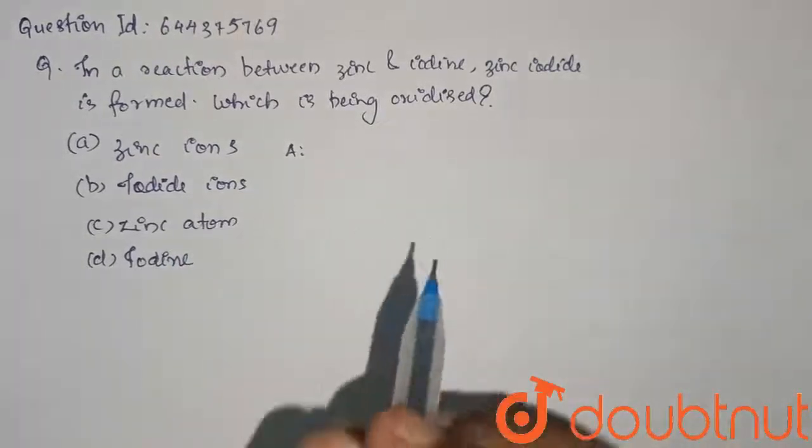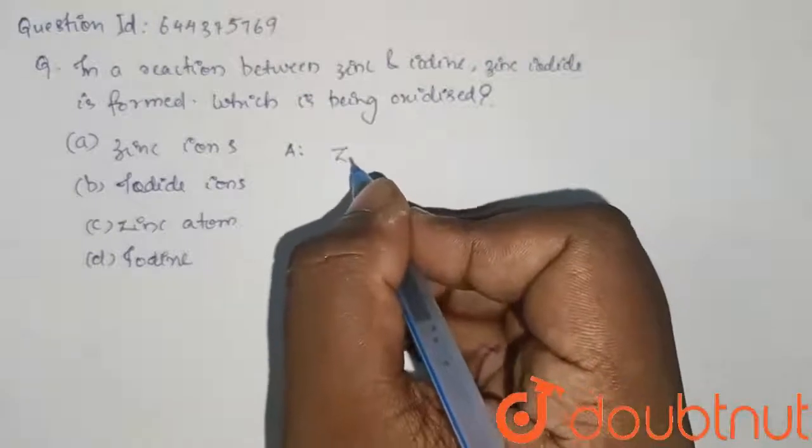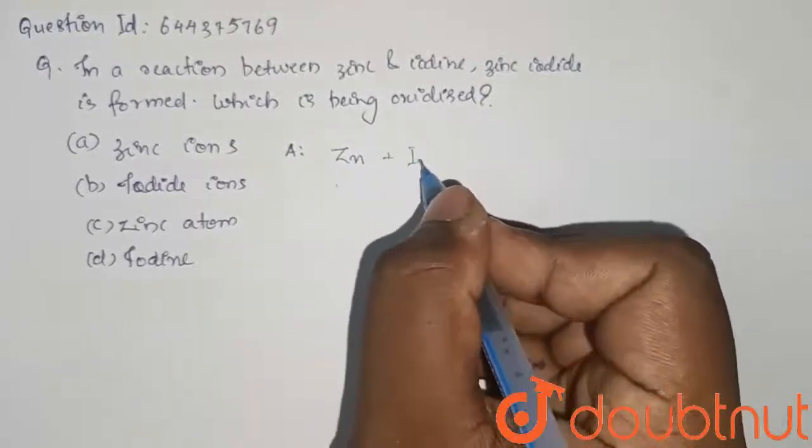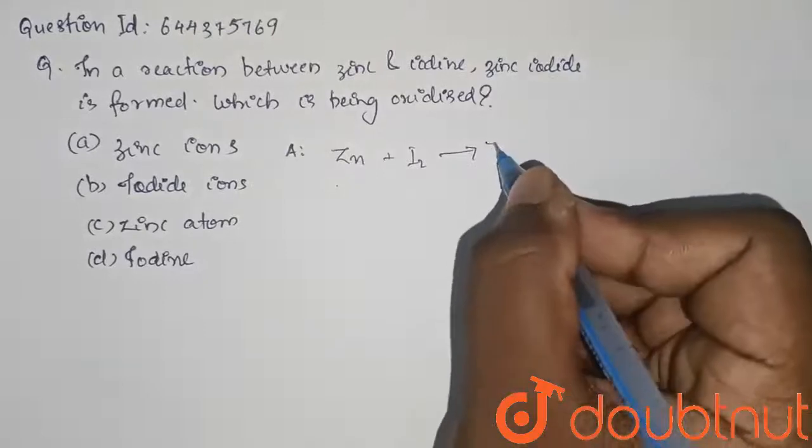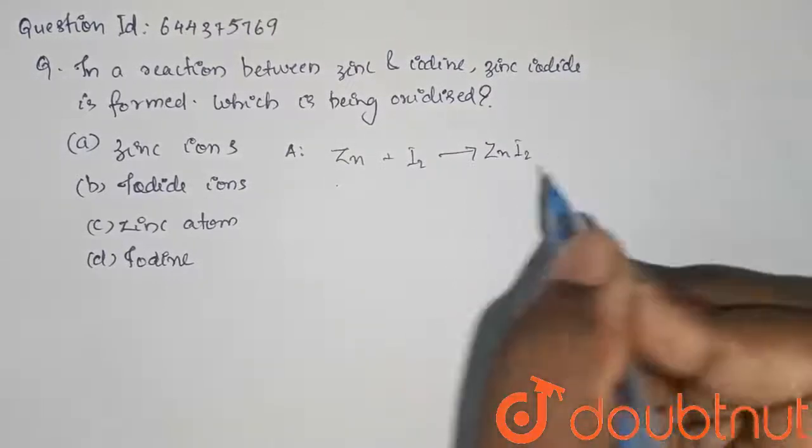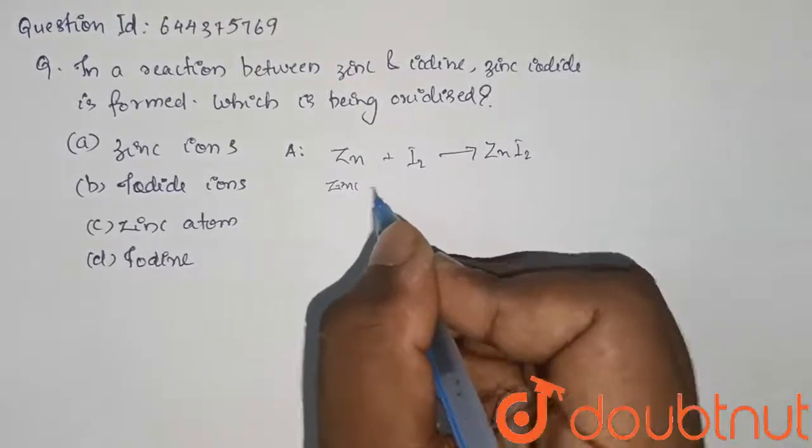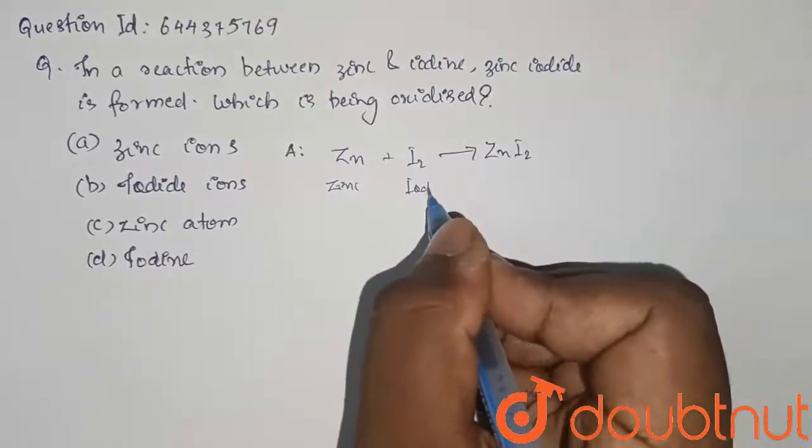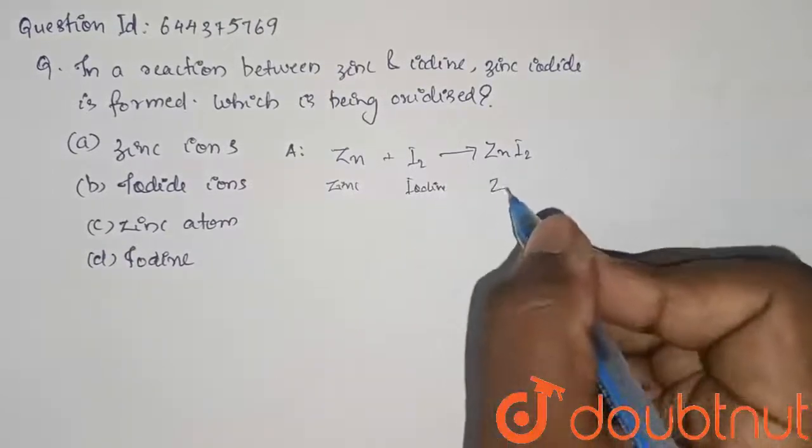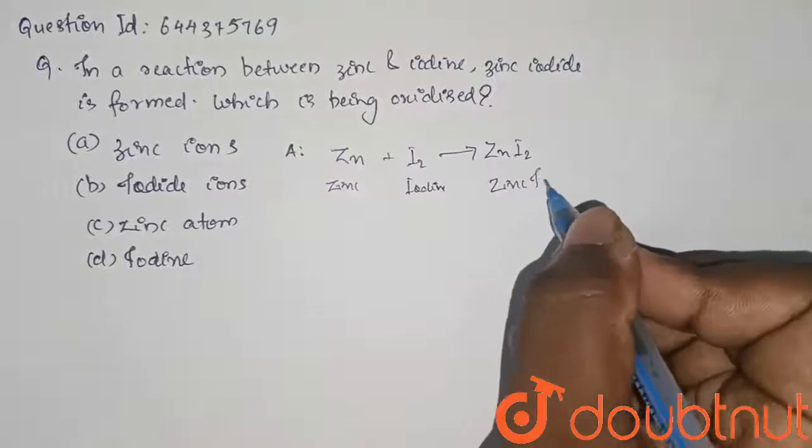So first of all, let us write the reaction which is happening. Zn plus I2 gives ZnI2. That is, zinc on reacting with iodine gives zinc iodide.